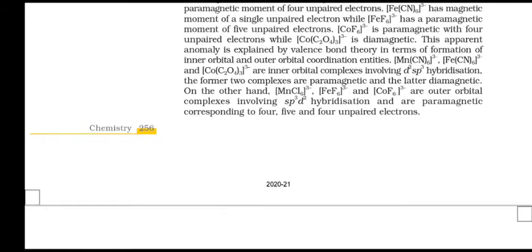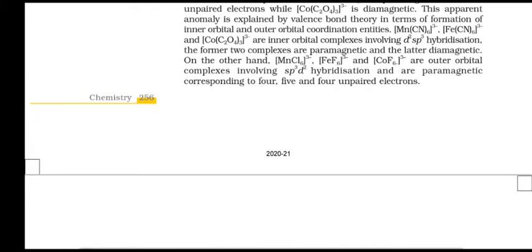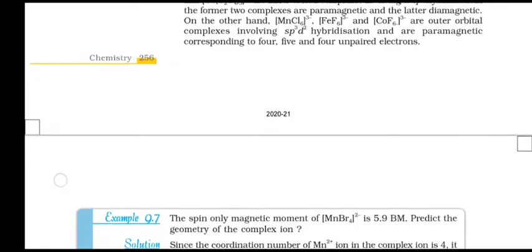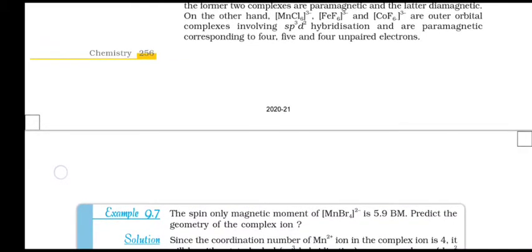This apparent anomaly is explained by valence bond theory in terms of inner orbital and outer orbital coordination entities. [Mn(CN)6]3-, [Fe(CN)6]3-, and [Co(C2O4)3]3- are inner orbital complexes involving d2sp3 hybridization; the former two are paramagnetic and the latter diamagnetic. On the other hand, [MnCl6]3-, [FeF6]3-, and [CoF6]3- are outer orbital complexes involving sp3d2 hybridization and are paramagnetic corresponding to 4, 5, and 4 unpaired electrons respectively.